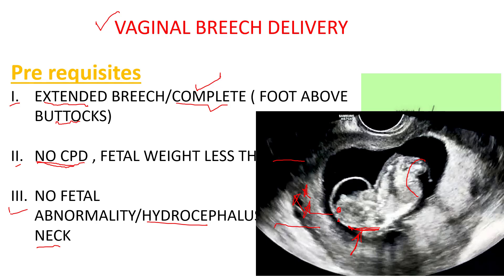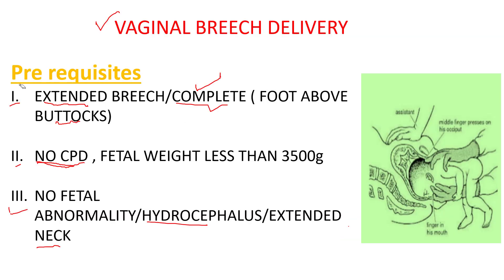When the fetus has an extended neck, the face is upward — this is called the 'star gaze sign.' If any scenario on ultrasound mentions the star gaze sign, the examiner is simply telling you to go for C-section. If there is fetal abnormality, star gaze sign, or extension of the neck, go for C-section. These three points — type of breech, no fetopelvic disproportion, and no fetal abnormality — are the prerequisites for vaginal breech delivery. Memorize them — they are important for viva, OSCE, and MCQs.